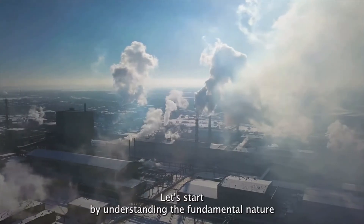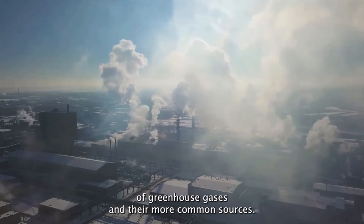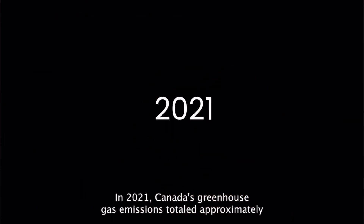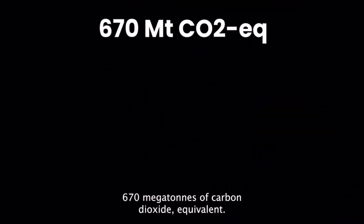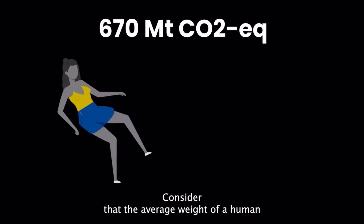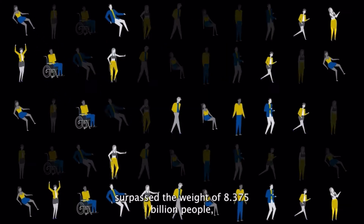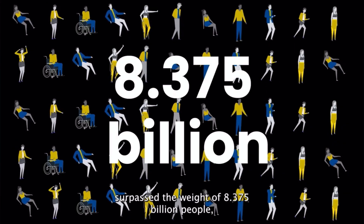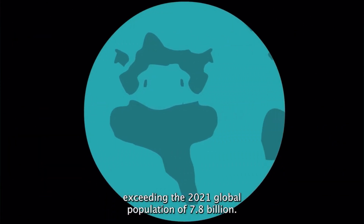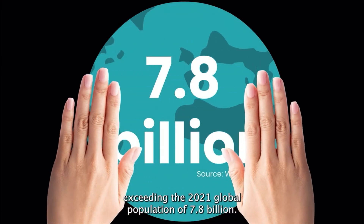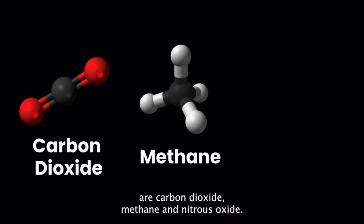Let's start by understanding the fundamental nature of greenhouse gases and their more common sources. In 2021, Canada's greenhouse gas emissions totaled approximately 670 megatons of carbon dioxide equivalent. To put that into perspective, consider that the average weight of a human being in North America is around 80 kilograms. The greenhouse gas emissions emitted by Canada alone surpass the weight of 8.375 billion people, exceeding the 2021 global population of 7.8 billion. The three primary greenhouse gases of concern are carbon dioxide, methane, and nitrous oxide.